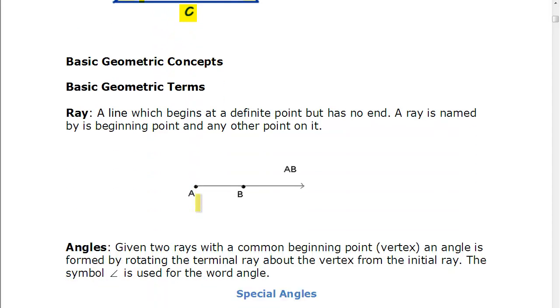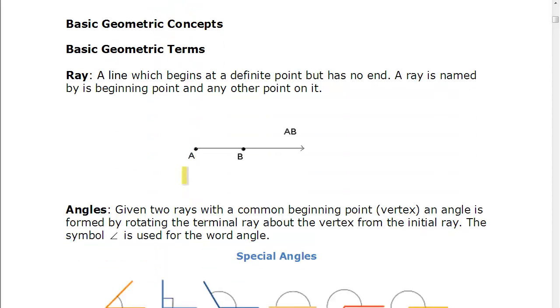Some terms that you've probably heard of before but are important here, so we have a ray, which is any line that begins at a definite point and has no end, so it goes forever. So it starts at A as a definite point and goes on forever. It's called ray AB, and we denote it like this, ray AB with one arrow.